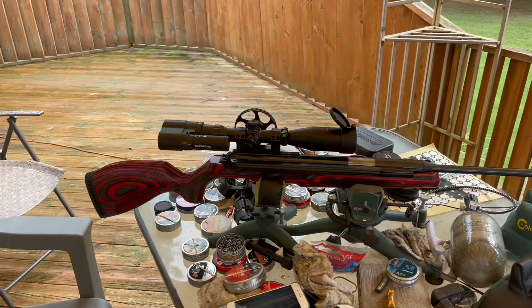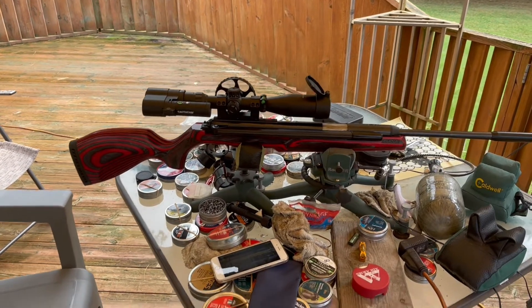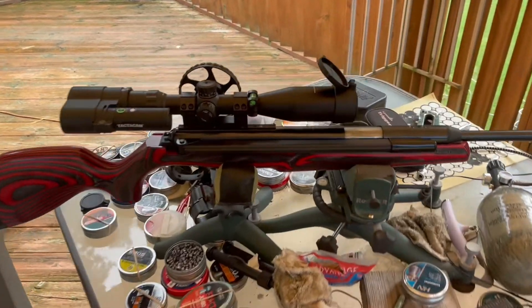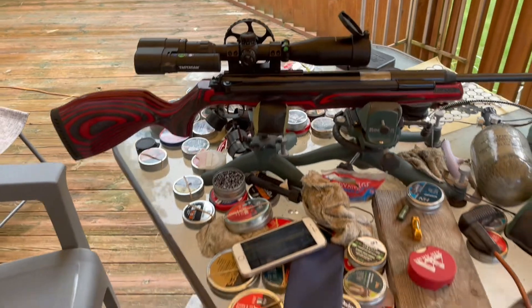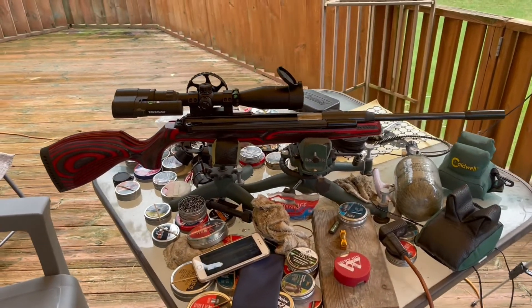Welcome to the AFL Airguns and Pesting channel and this is part two of the Diana 54 Air King Pro and .22 caliber Vortec product tune.